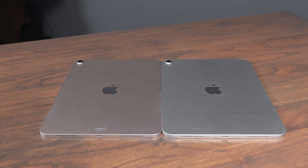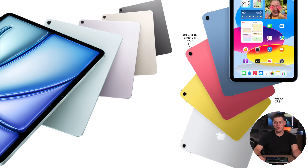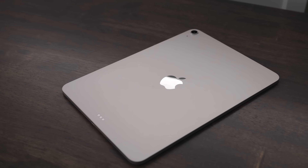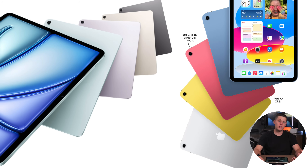Another difference is the colors available. The iPad Air comes in space gray, starlight, purple, or the new sky blue color. The A16 comes in more vibrant colors — silver, yellow, pink, or a darker blue. One other difference is that the iPad Air has Wi-Fi 6E while the iPad A16 only has Wi-Fi 6, though most people aren't going to notice that difference in the real world.